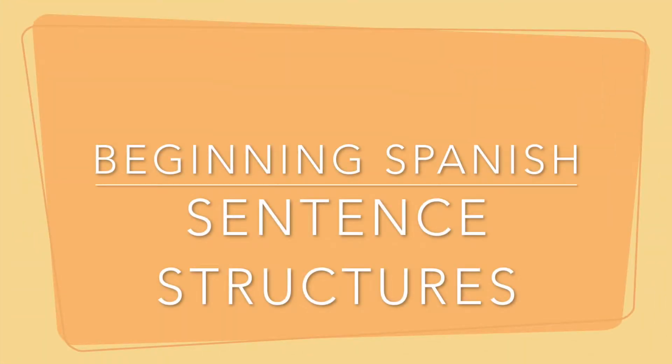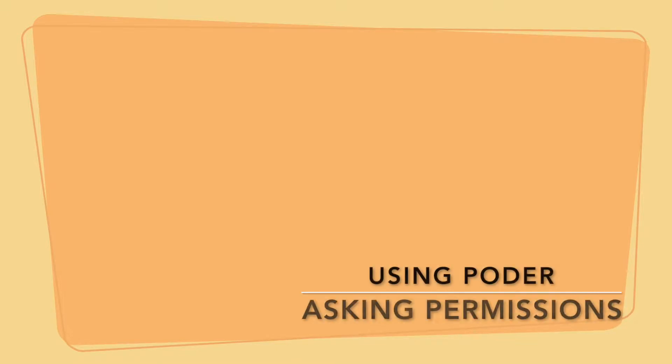Hello everybody, Rosita here, your go-to vocal and language coach here at TakeLessons.com. Welcome to another episode of Beginning Spanish Sentence Structures. Today we are going to learn how to use the verb poder — how to ask permission and how to say that you are able to do something. Let's get started.